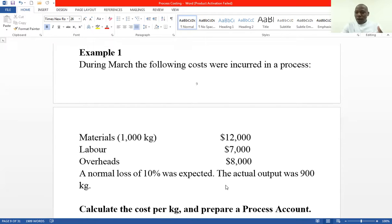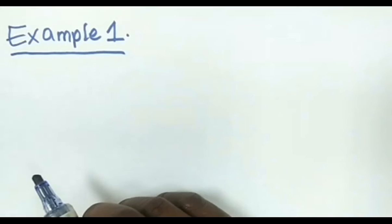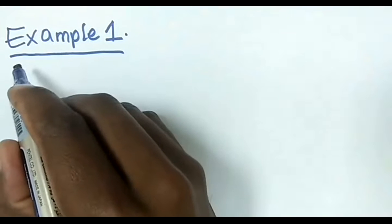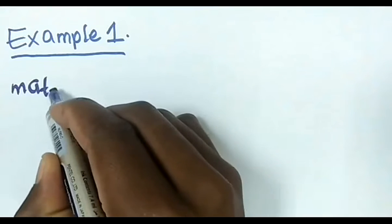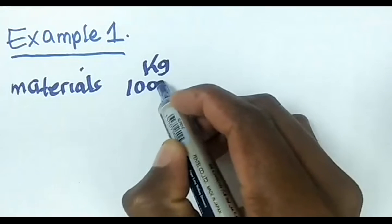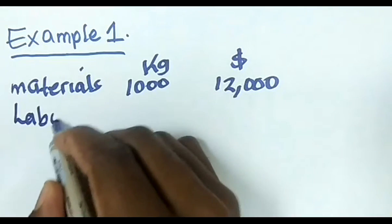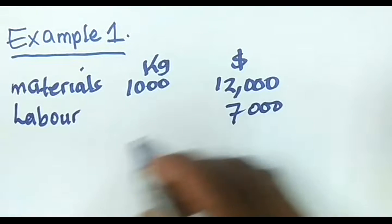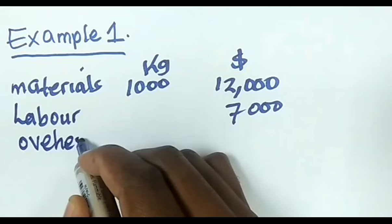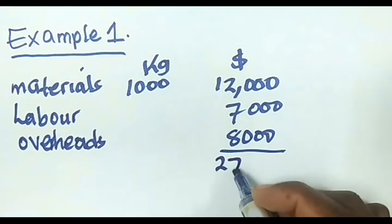Let's see how we deal with this. We'll do our costing first as a statement and then do a T-account after. We have materials: 1,000 kg at a cost of 12,000. Then we have labor at 7,000, and overheads at 8,000. So the total cost is 27,000, and the total units input is 1,000 kg.